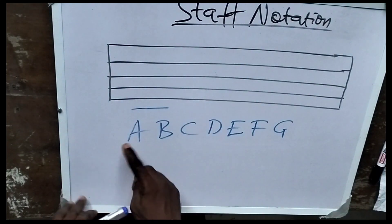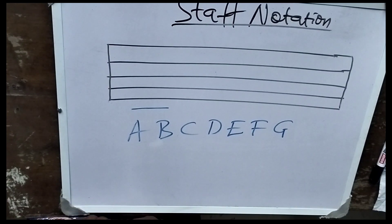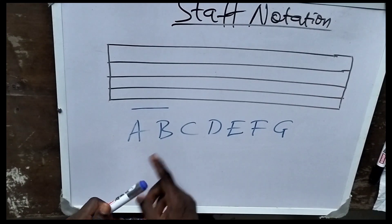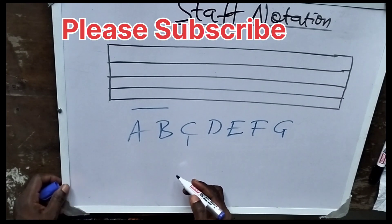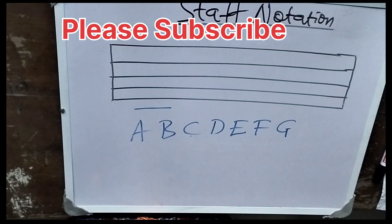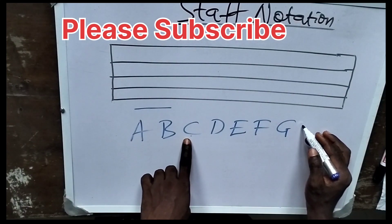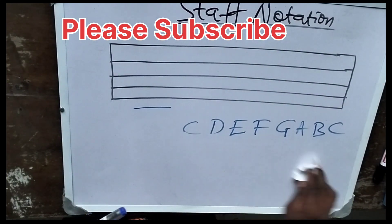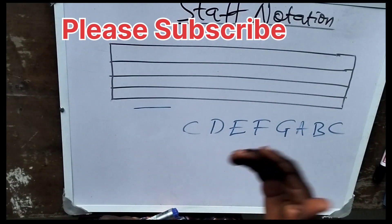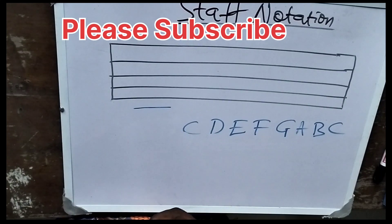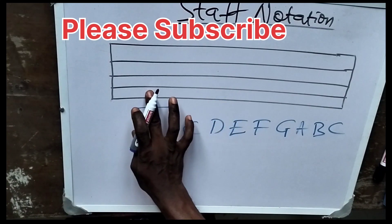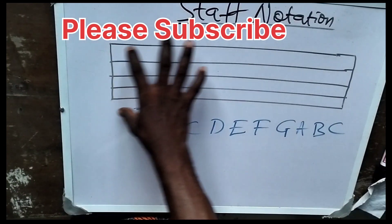So how do you put this on the staff? We have Doremi, we have the scales. How do you study it? First thing you should know is that on the keyboard, we normally start with C. Once you start at C, you will still end at another C, which makes A, B, C. So there are multiple notations, there are keys. This first line here is called the ledger line. We have the space and we have the lines. So these lines and the spaces are where notes are written. This is the octave.